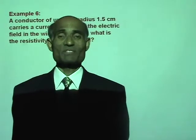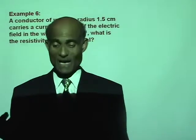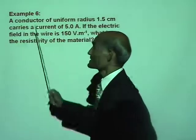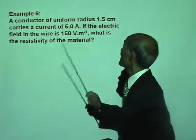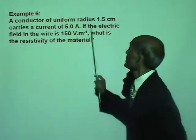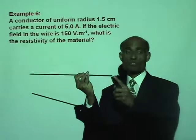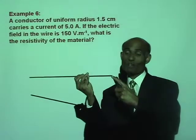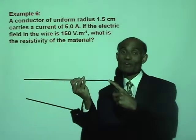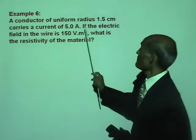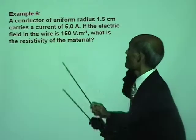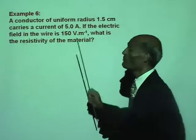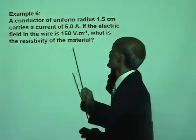We will now continue with our study of resistance, current and voltage. Let's do another example. A conductor of uniform radius 1.5 centimeter — once you know the radius, you can calculate the area of cross-section, because the area of cross-section of a conductor is a circle, and the area of a circle is pi r squared. It carries a current of 5 ampere. If the electric field in the wire is 150 volts per meter, what is the resistivity of the material?